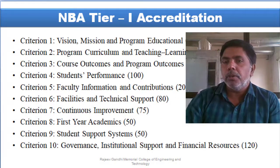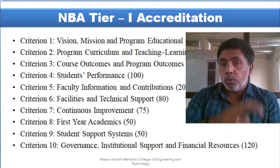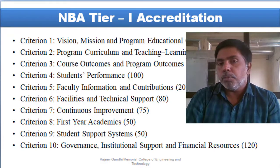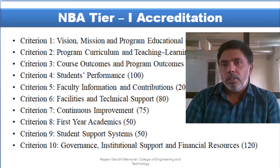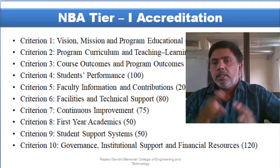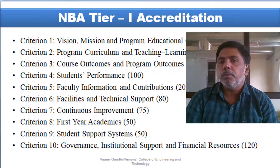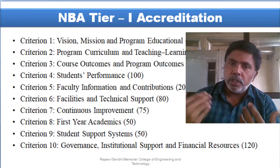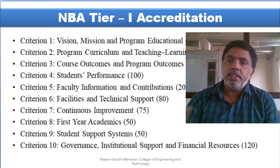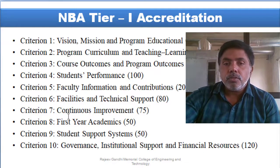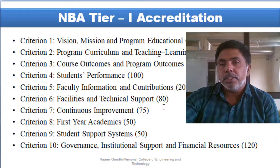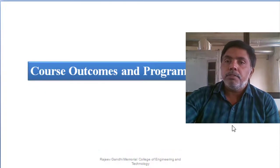Criteria one covers vision, mission, and program education objectives — how we write them and maintain correlation. Criteria two addresses program curriculum and teaching-learning process. In part three, we will discuss criteria three — course outcomes and program outcomes — and criteria seven — continuous improvement.